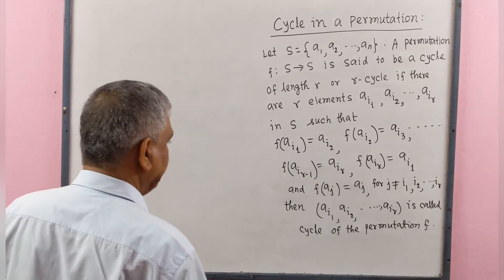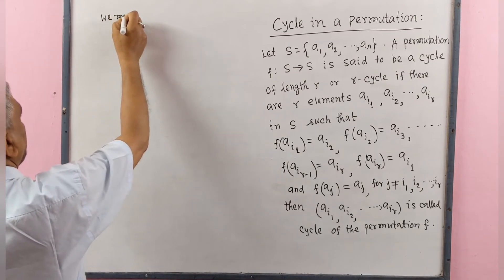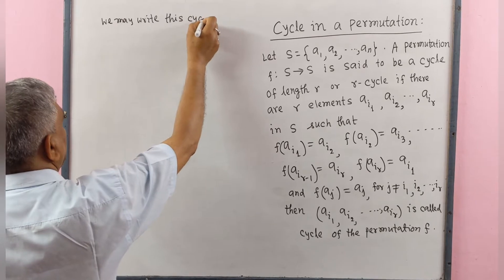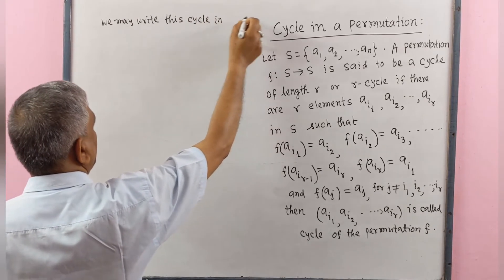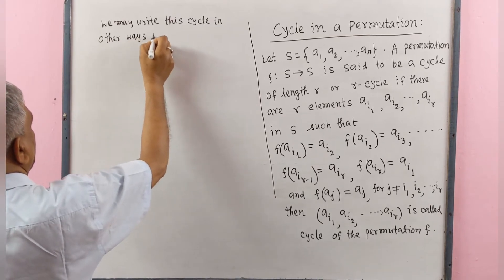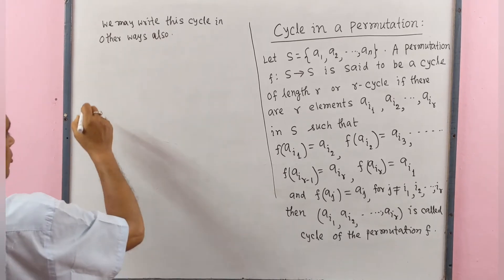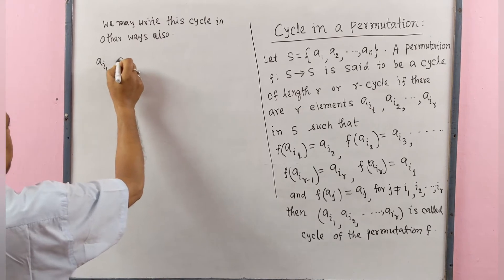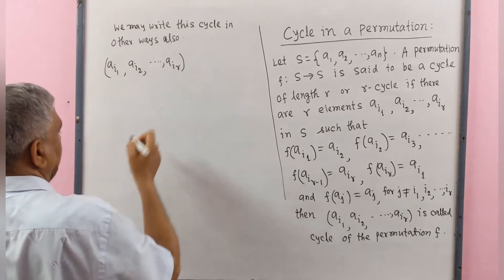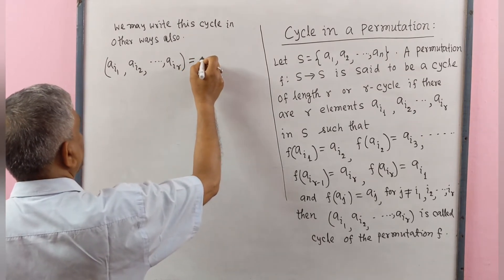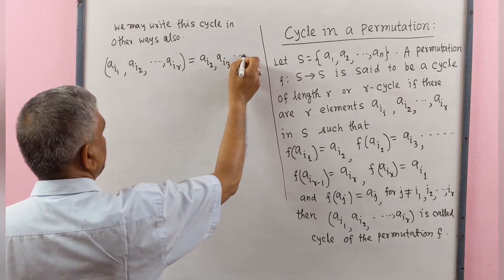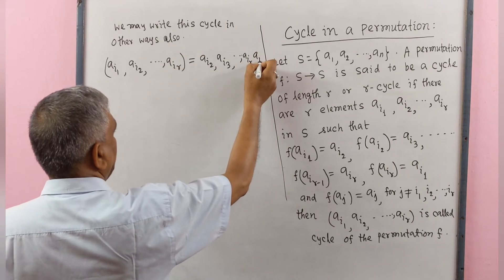We may write this cycle in other ways also. The R-cycle (a_i1, a_i2, ..., a_ir) may be written as (a_i2, a_i3, ..., a_ir, a_i1).